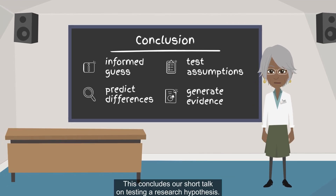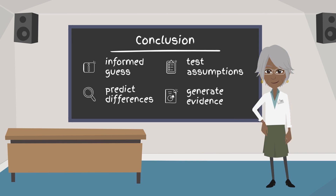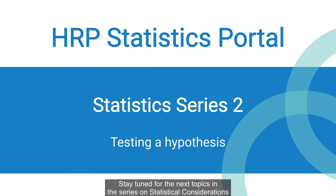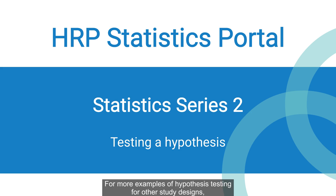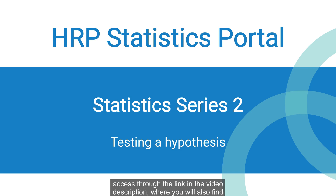This concludes our short talk on testing a research hypothesis. Stay tuned for the next topics in the series on statistical considerations for research study planning, which will discuss research objectives, study design, and population sampling. For more examples of hypothesis testing for other study designs, please visit the HRP Statistics Portal and request access through the link in the video description, where you will also find the link to the entire HRP Statistics Portal video playlist.